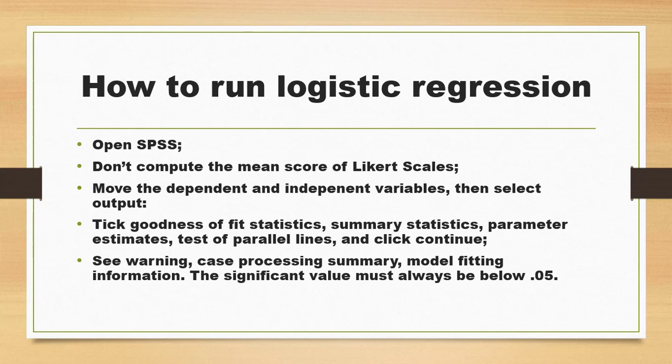Next, move the dependent variable and independent variables to the corresponding lists and select output options. In the output, select goodness of fit statistics, summary statistics, parameter estimates, test of parallel lines, then click continue. Check the warning and case processing summary. In the model fitting information, the significance value must always be below 0.05.